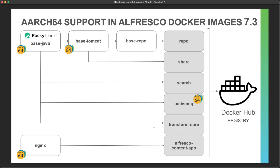If you try to run these Docker images on a new Mac laptop with the Apple Silicon chip, you will find that it doesn't work or works very slowly. This is why we need to provide these Docker images with the new ARM64 architecture.